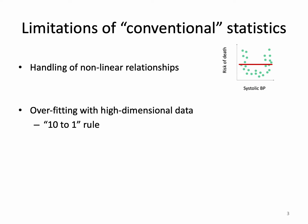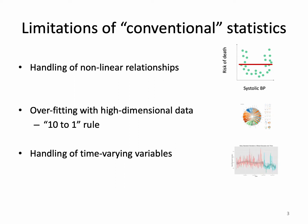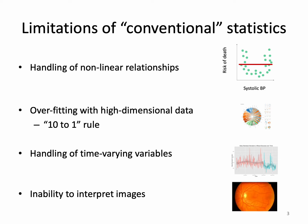Conventional statistics can also struggle when you have high dimensional data — meaning not many people have the outcome of interest, but there are lots of variables you might want to adjust for. It can also struggle with time-varying variables, like a patient's blood pressure, mood, or blood sugar. And conventional statistics really can't do anything if you want to build a model to interpret images.